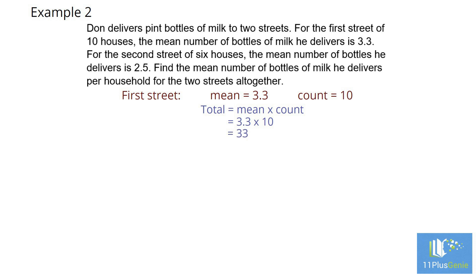For the second street, we have a mean of 2.5 and a count of 6. Total number of bottles delivered equals 2.5 times by 6 for a total of 15. The total number of milk bottles delivered in the two streets are 33 plus 15, which equals 48.